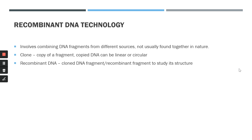Recombinant DNA technology involves combining DNA fragments from different sources that are not usually found together in nature. We copy and paste different segments of DNA together, and this fragment is called a recombinant DNA fragment. To understand recombinant DNA technology, we first need to understand what a clone is. In molecular biology, a cloned copy of DNA can be either a linear or circular fragment, and recombinant DNA is a cloned DNA fragment used to study the structure of genes or certain DNA sequences.